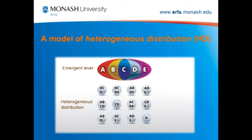In this diagram, I've tried to capture the notion of heterogeneous distribution as it relates to cultural cognition. There are two levels: one is the emergent level — a technical notion where what emerges from local interactions is more than the sum of the individual parts — and the local level is the heterogeneous distribution, where the elements of the emergent level are not equally shared between units at the local level.